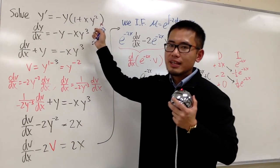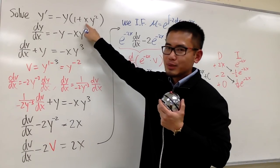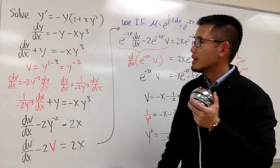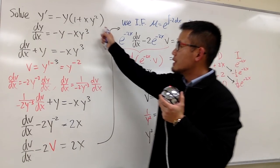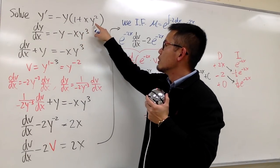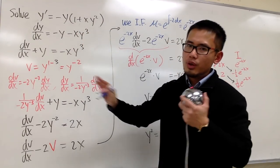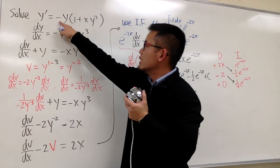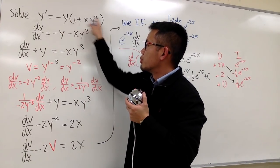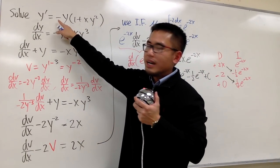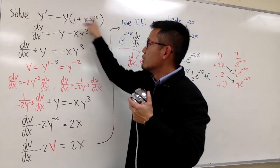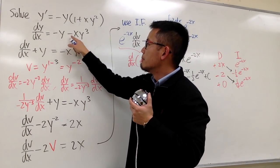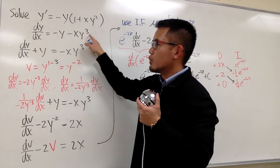Notice that this is not separable, because we have this x right here and we cannot factor anything out. Also, this is not linear because we have the y squared, so right away you know it's not linear. But we do have this negative 1 in front of these parentheses, so let's multiply the negative y into the parentheses. We end up with negative y minus x times y to the third power.